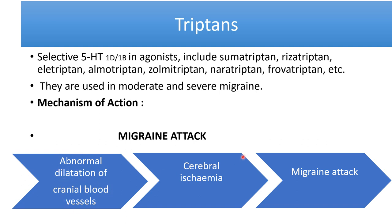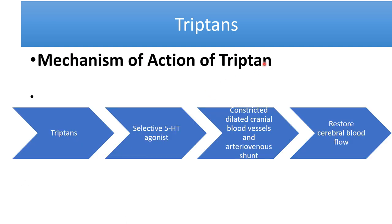When triptans are introduced as selective 5-HT1 receptor agonists, they cause constriction of dilated cranial blood vessels and arteriovenous shunts, restoring cerebral blood flow. This is the primary mechanism by which triptans abort the acute migraine attack.